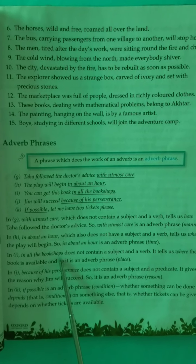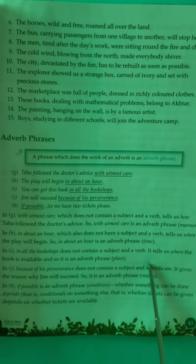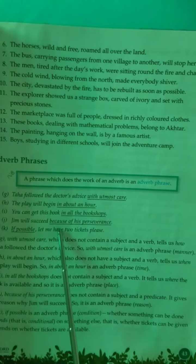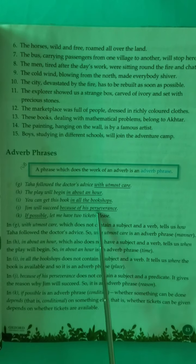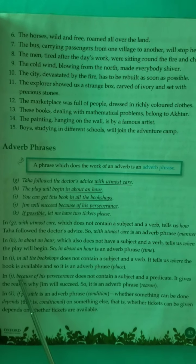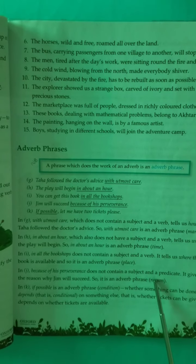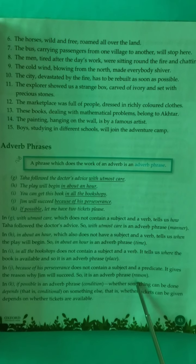In sentence I: 'You can get this book in all the bookshops.' The phrase 'in all the bookshops' does not contain a subject and a verb; it tells us where the book is available. So it is an adverb phrase. In sentence J: 'Jim will succeed because of his perseverance.' The phrase 'because of his perseverance' does not contain a subject and a predicate; it gives the reason why Jim will succeed. So it is an adverb phrase giving us the reason.